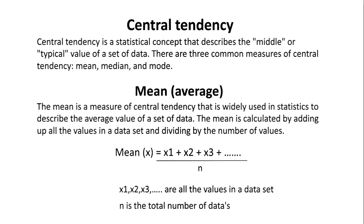Central tendency is a statistical concept that describes the middle or typical value of a set of data. There are three common measures of central tendency: mean, median, and mode.